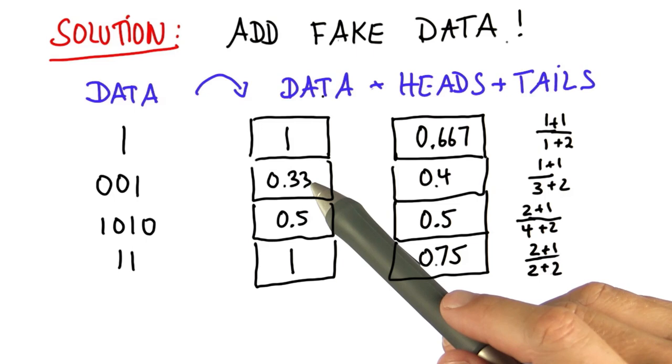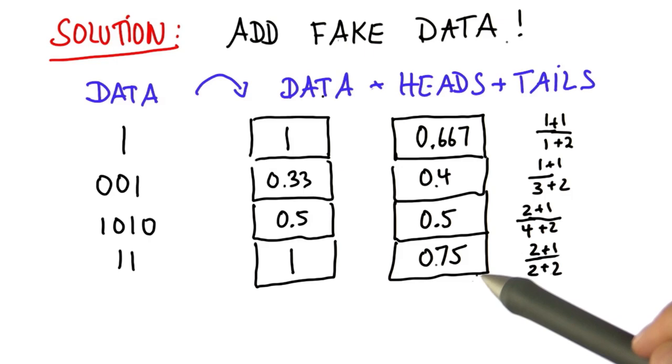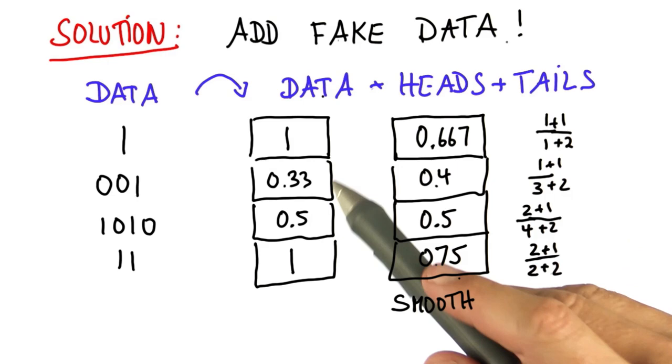0.33 is further away from 0.5 than 0.4. So all these numbers get moved towards 0.5. So this is somewhat smoother. We also see that these two outcomes,